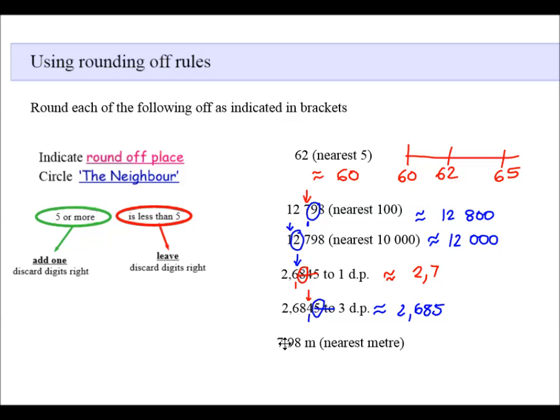Rounding often appears in a context like this: 7.98 meters to the nearest meters. That is actually asking you to round off to the nearest whole number. So I identify my nearest whole number, which is seven. I circle the neighbor. It is five or more, so I add one. So to the nearest meter, that would be eight meters.